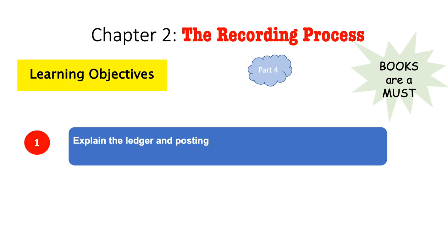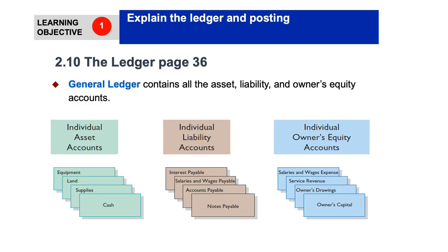Chapter 2, the recording process, part 4. During this presentation we will learn more about the ledger and how to post to ledger. Open your books to page 36, section 2.10: the ledger. What is a ledger? Every account has a ledger — it's a place where you can track all the changes that are taking place for the account.